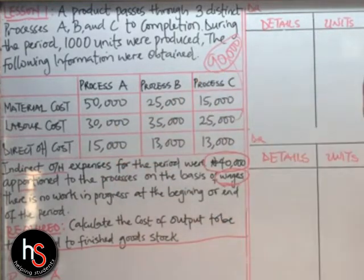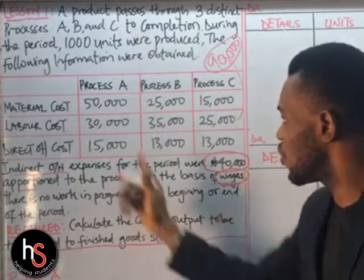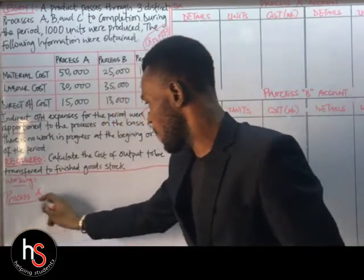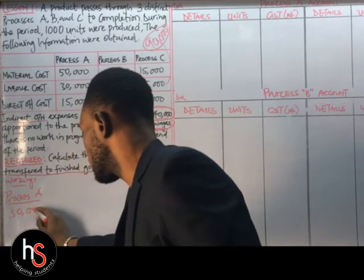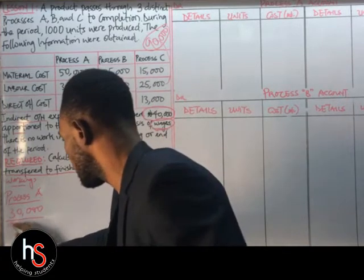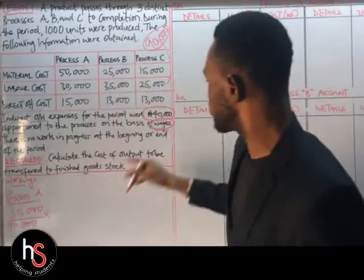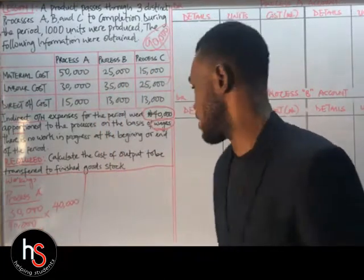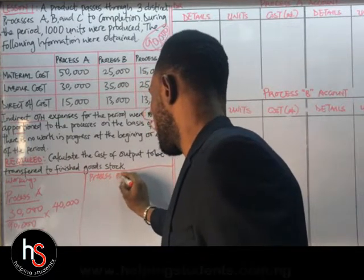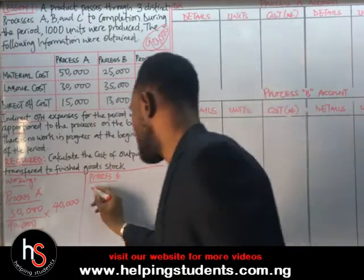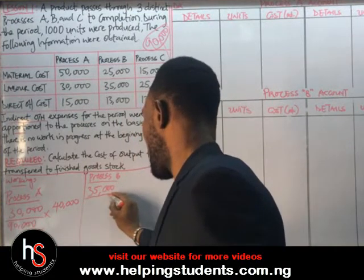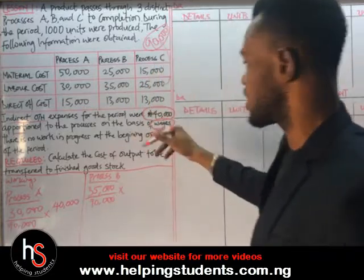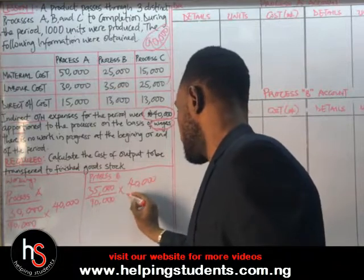For process A: 30,000 ÷ 90,000 × 40,000 gives us 13,333.3. For process B: we have 35,000 under labor cost, so 35,000 ÷ 90,000 — remember, 90,000 is the summation of all labor costs — times 40,000 gives us 15,555.6. Then for process C, we have 25,000, so 25,000 ÷ 90,000 × 40,000.